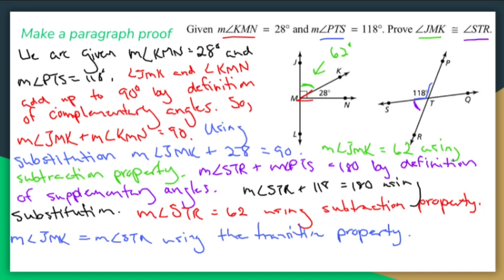And now, if their measures are the same, we can finally end this thing and say angle JMK is congruent to angle STR by definition of congruence. I nailed the spacing. Very proud of that.